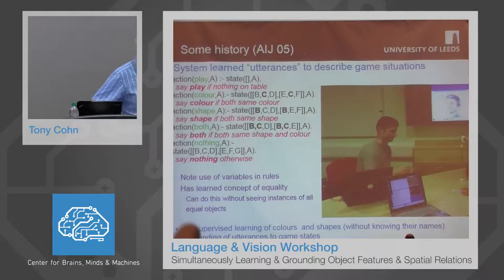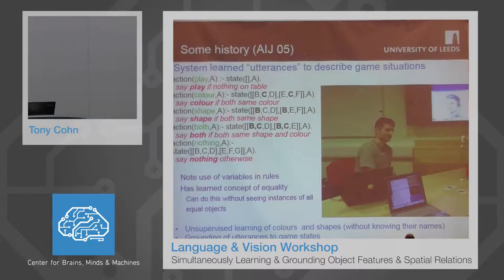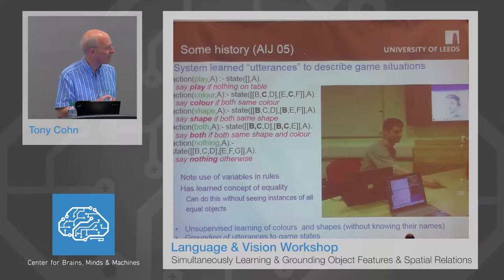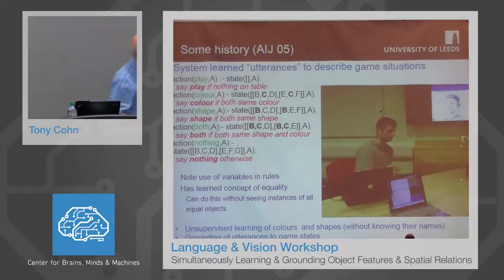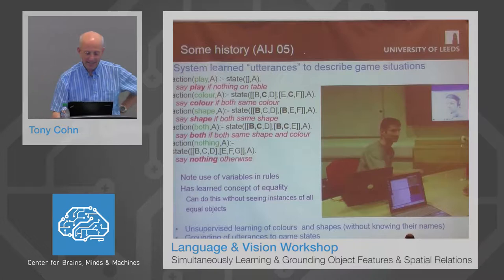It was able to learn the concept of equality without seeing all instances of all objects. The key point of this work for today's workshop is that there's an unsupervised learning of colours and shapes without knowing their names. In this case, we weren't grounding the names of the shapes and colours, but we were grounding the utterances to the game states. Here you can see the different objects in square brackets — there are two different objects, and they've got a particular colour and a particular shape.